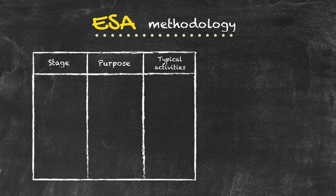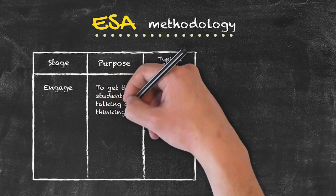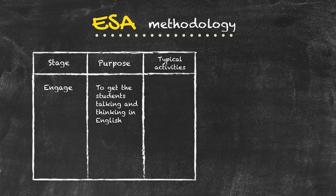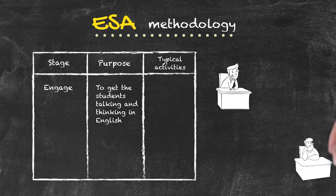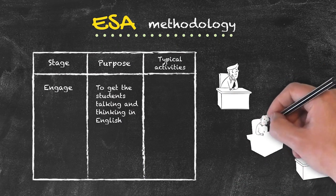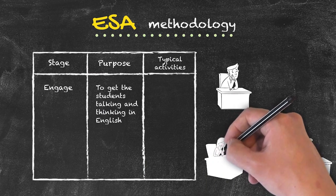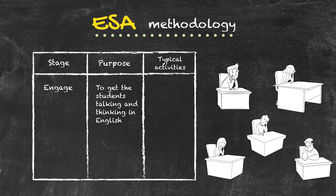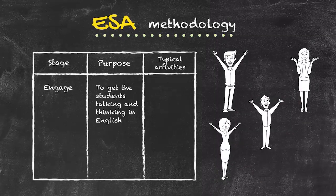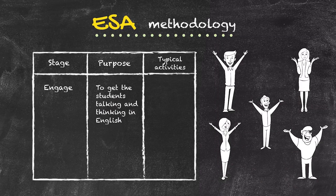The first stage is known as the Engage, and its sole purpose, as the name implies, is to get the students talking and thinking in English. There is no reason whatsoever when these students come to your class that they should have said a single word of English up until that point in the day. So we cannot expect them just to come in and immediately start talking in English. We need to have some activity, such as the Engage, to get them warmed up. We try to ensure that these activities involve everyone in the class, that they are interactive and fun.